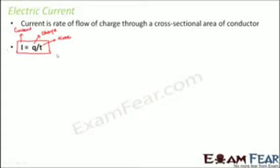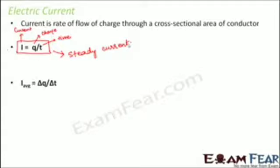This scenario is true for steady current. But does that mean that current would be steady at all times? Not really, because current might not be steady at many times. So what's the scenario when current is not steady? In that case we talk about something called average current.